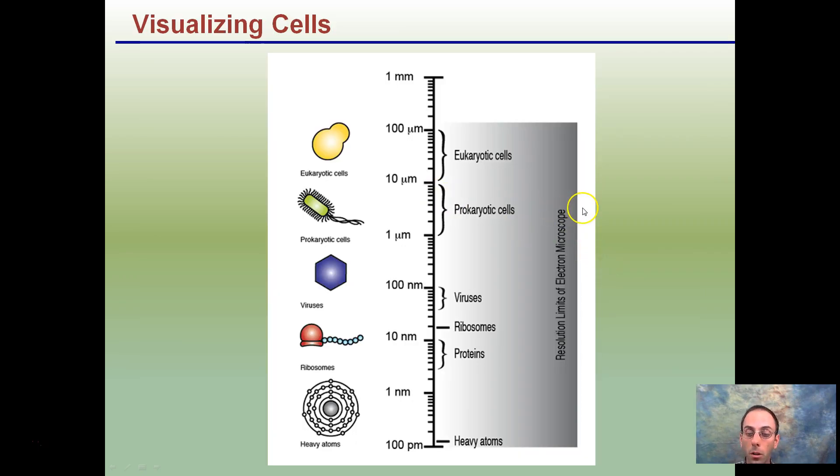Visualizing cells. Again, they're very small. Heavy atoms here are very small. Proteins are kind of the next size up. Ribosomes. Viruses. Prokaryotic and eukaryotic cells. We'll be separate videos in each one of these. Prokaryotic cells we could think of like bacteria. We think of them as more rudimentary, more basic cells.